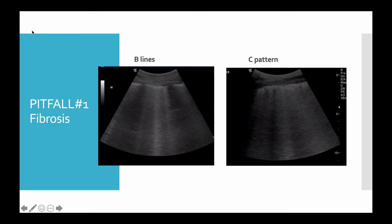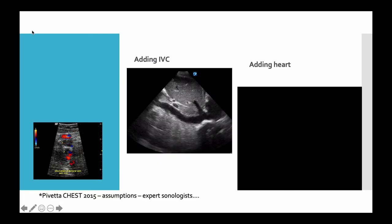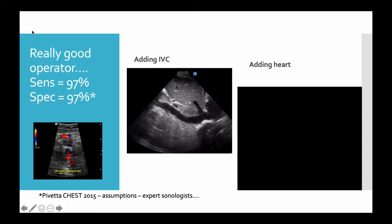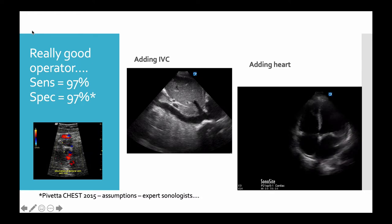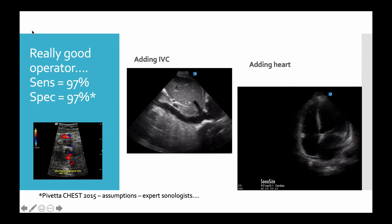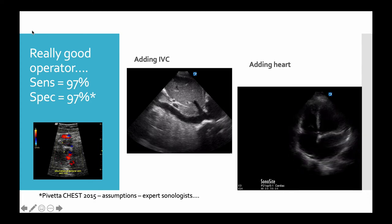On the left we have typical B-lines in heart failure with the thin pleura. On the right we have B-lines with a thickened knobbly pleura. Lichtenstein used to call it a C pattern because the irregularities were less than a centimetre in size. Now an expert, to try and tell the difference between the two, will look at the IVC, will also add a heart view, and if you're really desperate put on some deep veins. When we add this sort of multi-system review we can get our diagnostic sensitivities up to 97%, bearing in mind though that although this was a large multi-centre study, it was with expert practitioners.